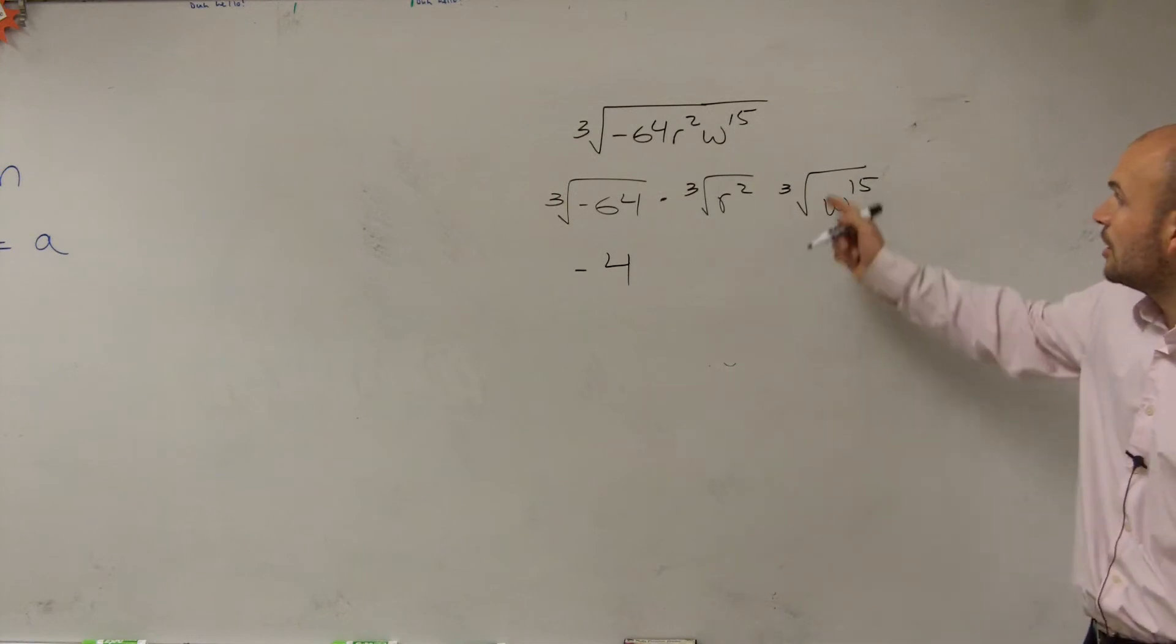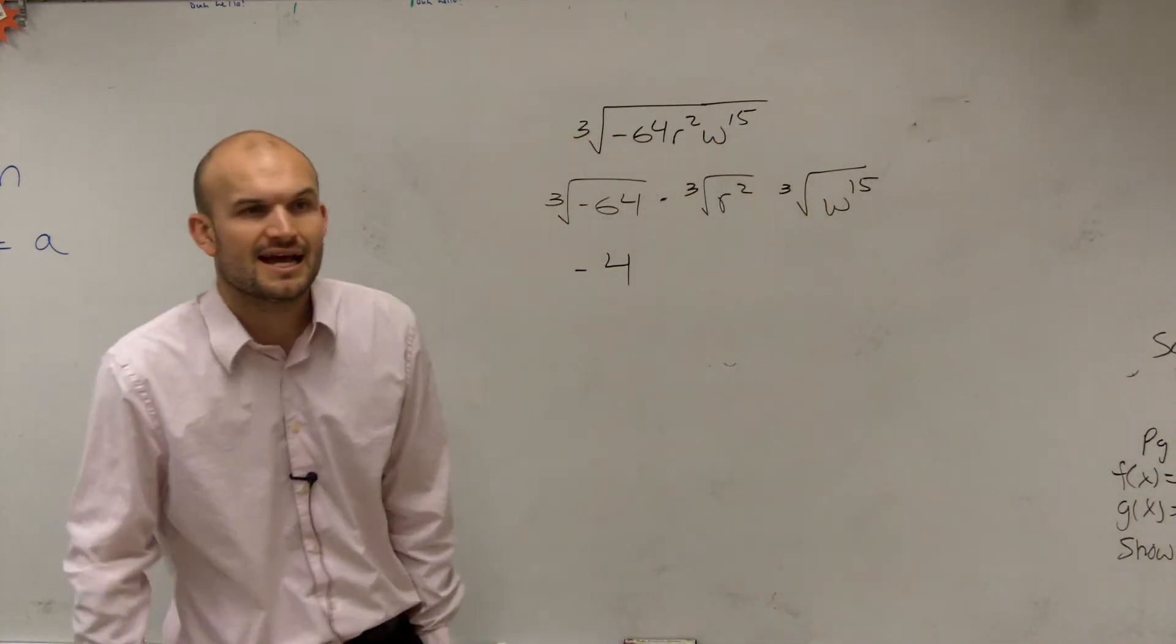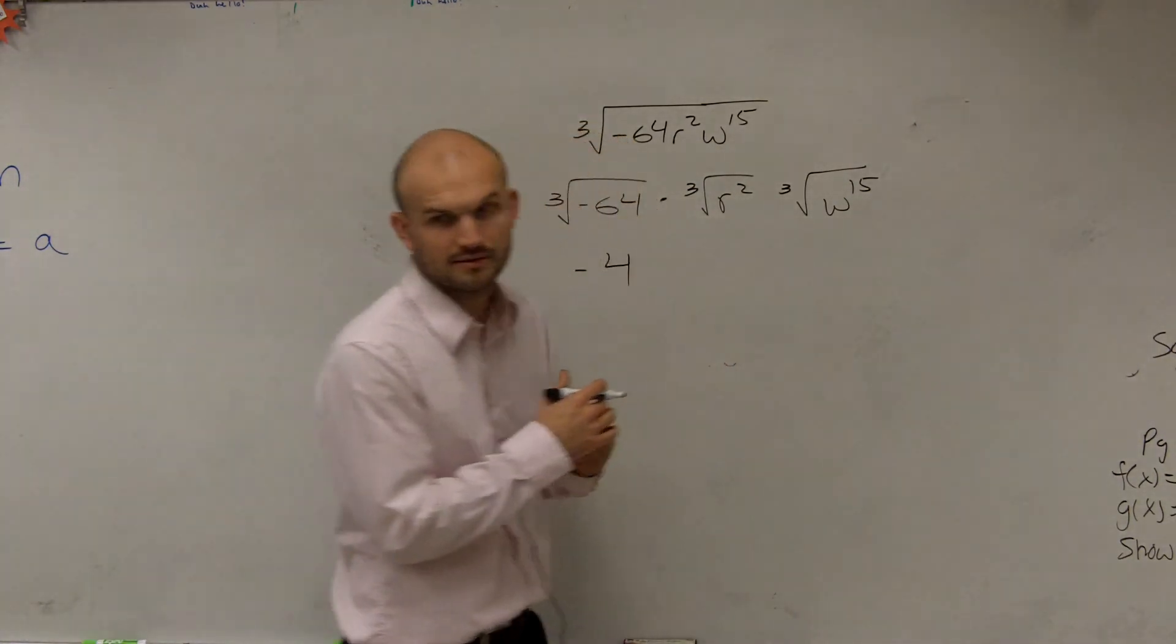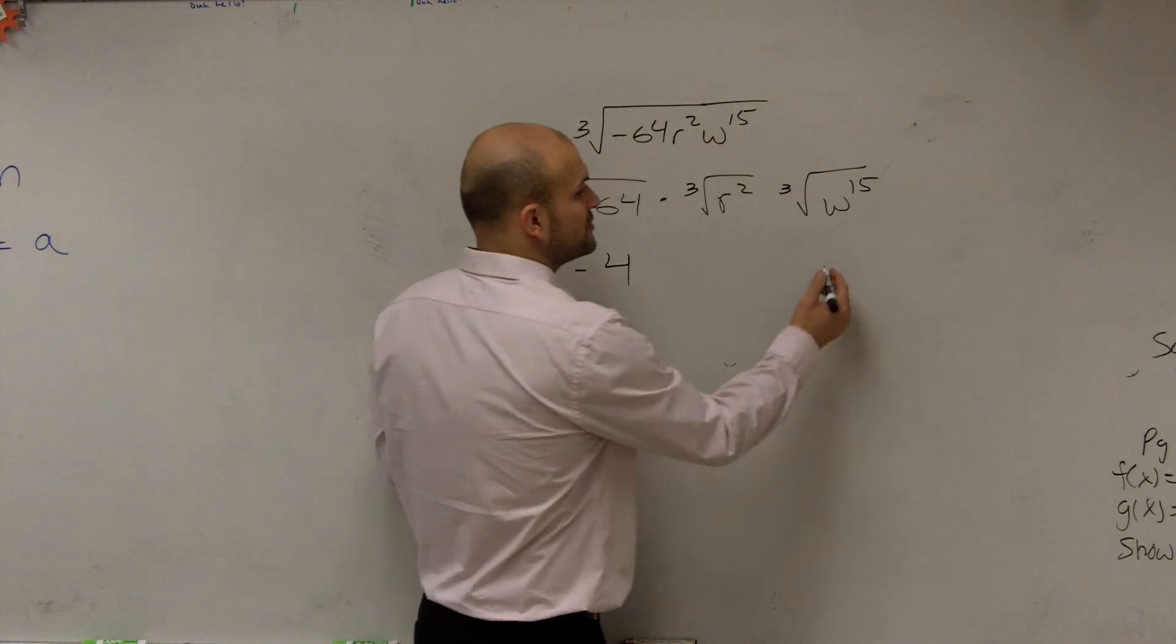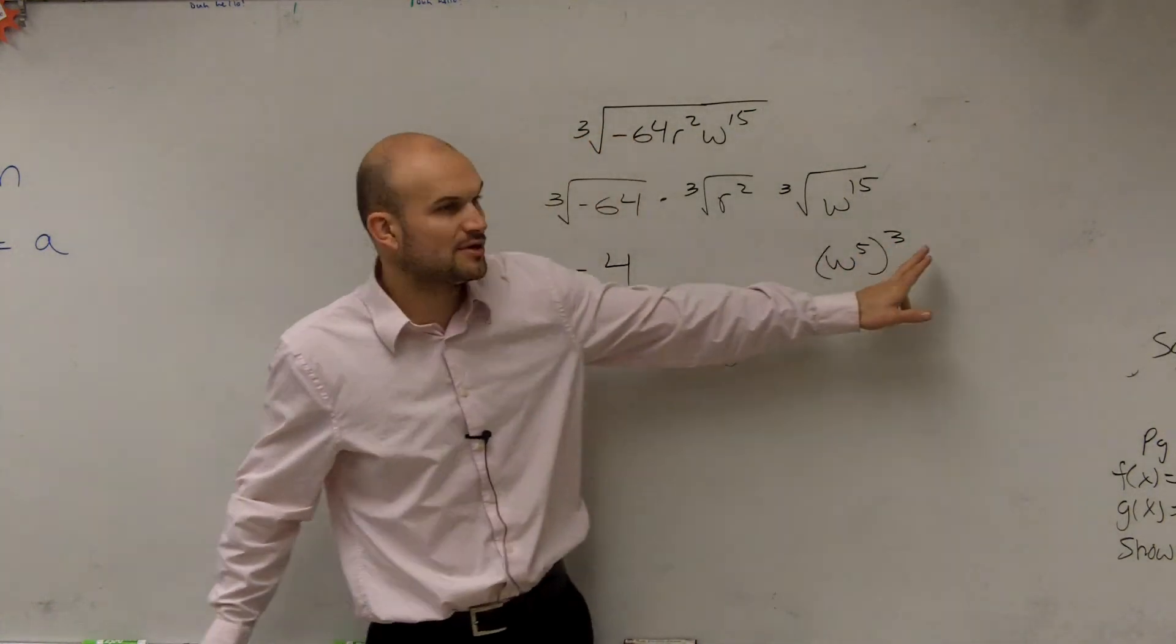What about w to the 15th? Can I write w to the 15th as a number multiplied by itself three times? Yeah. How could you write that? w to the fifth cubed, right? Because remember, you multiply the exponents.